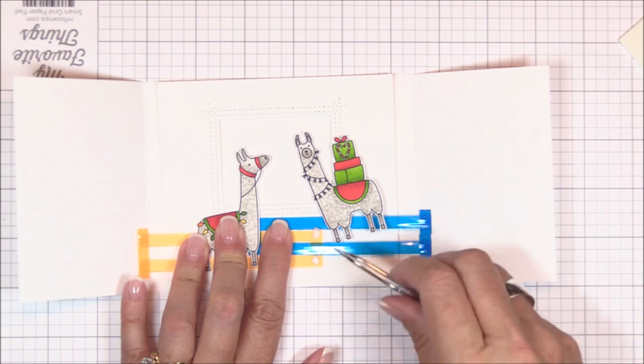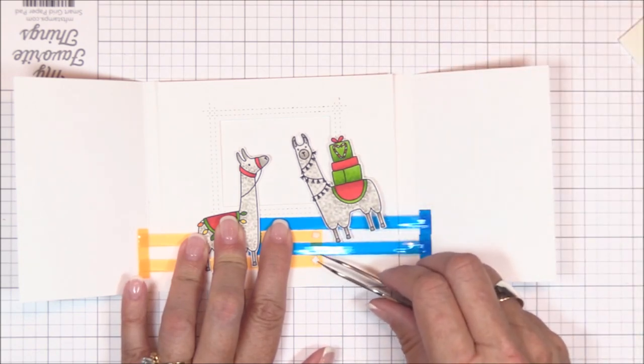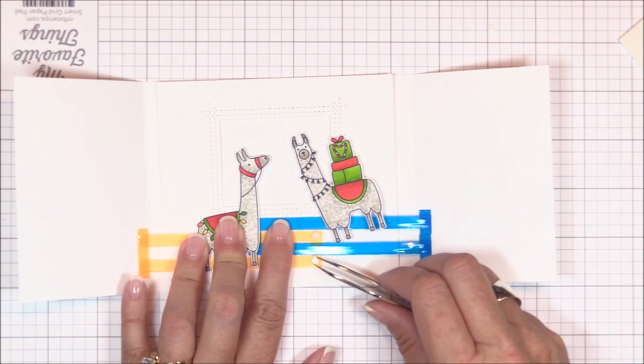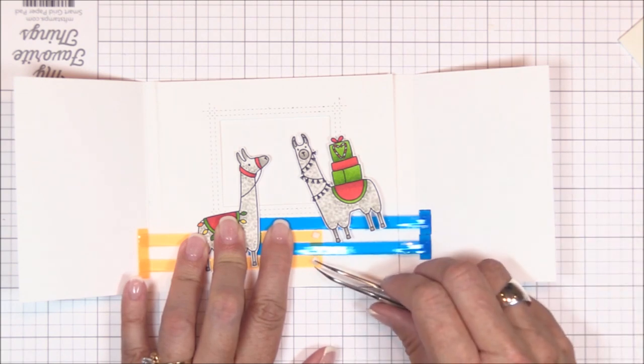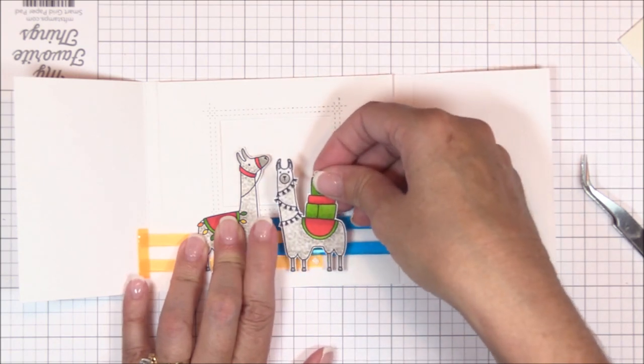I temporarily place that interior panel behind the mechanism to give me an idea of where I want my movable characters to be positioned. I stamped, colored, and die cut two of the llamas from the Happy Llama Days stamp set, and I'm positioning them onto the tri-fold die cuts.